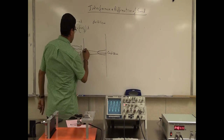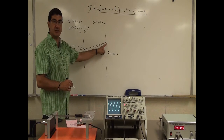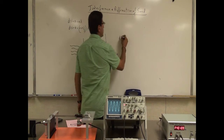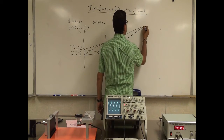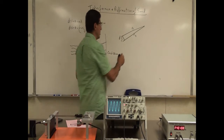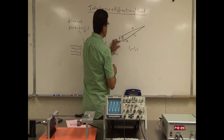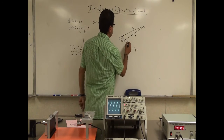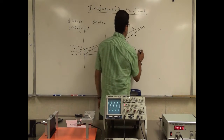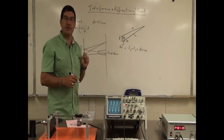If I go off to a certain angle, this wave and that wave travel different distances. The bottom wave travels a larger distance. The distance between the slits is D. R1 and R2 are the path lengths. The path difference R2 minus R1 can be shown to equal D sinθ, where θ is the angle from center.